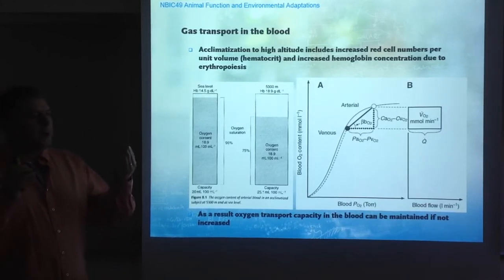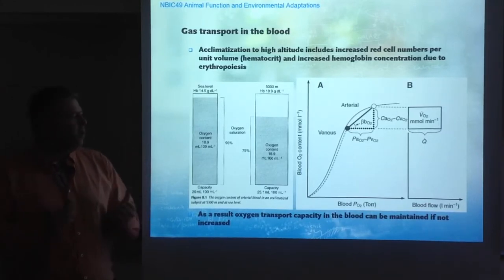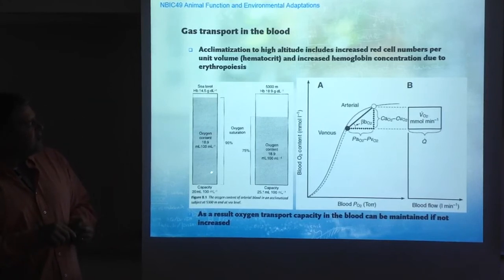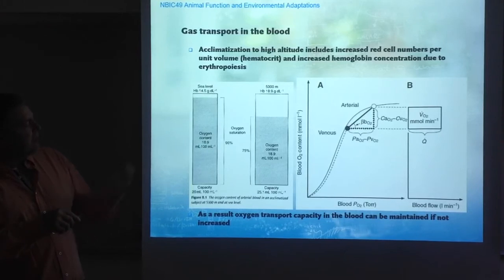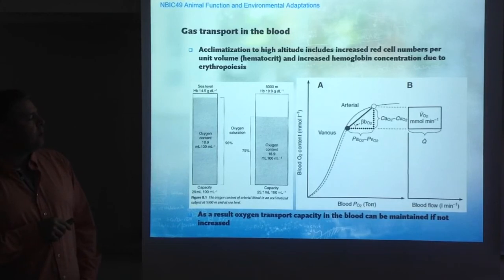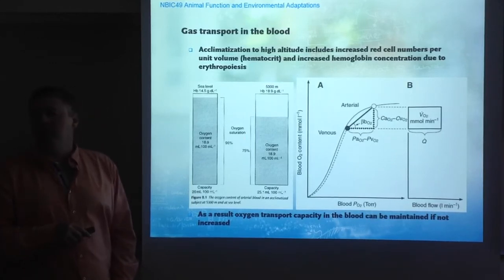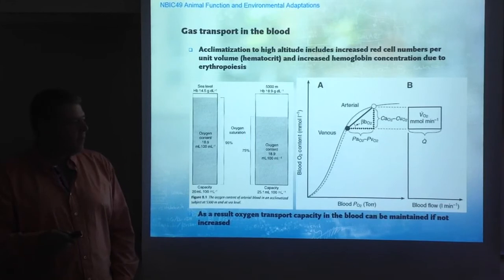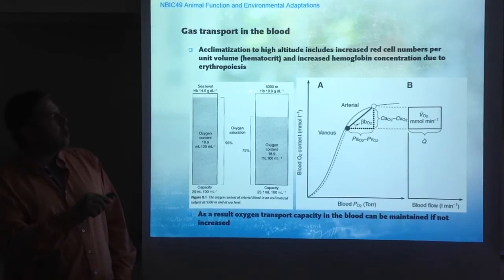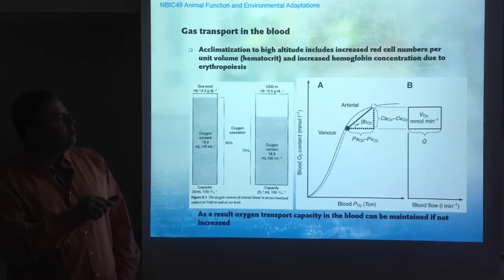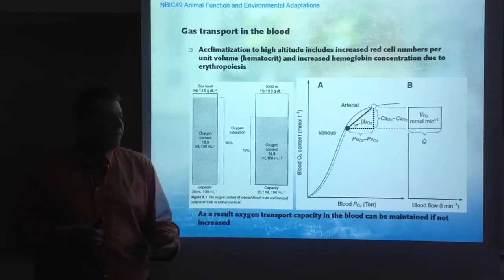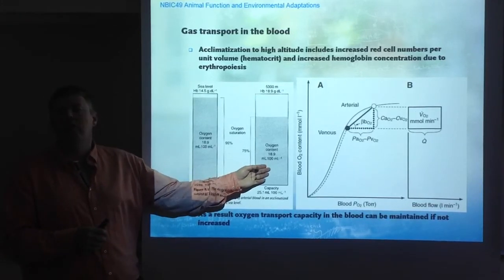At sea level, a given hemoglobin concentration accounts for oxygen content around 19 milliliters of oxygen per 100 milliliters. When you go to altitude, because the partial pressure is lower, there is going to be less saturation of the blood. To compensate for that, you can increase the hemoglobin concentration, making it possible that the oxygen content — the capacity for transporting oxygen — is maintained.